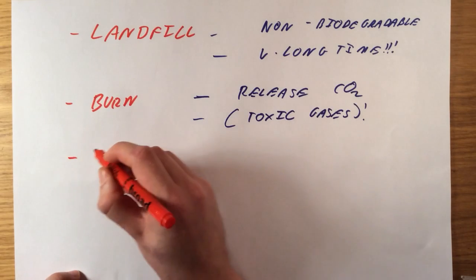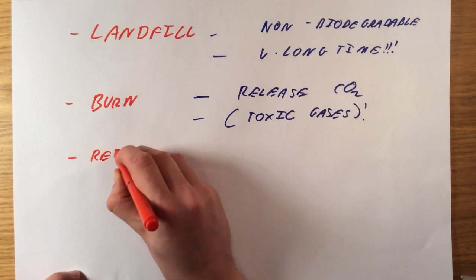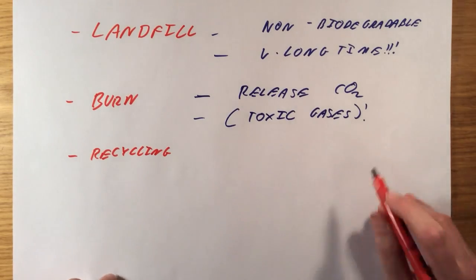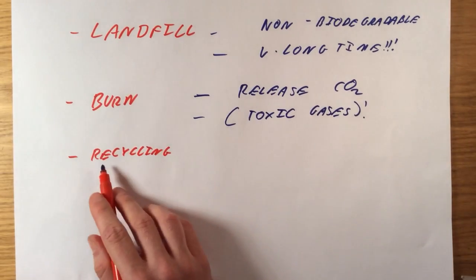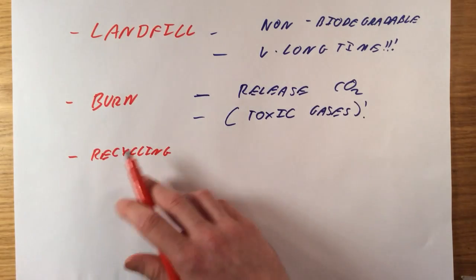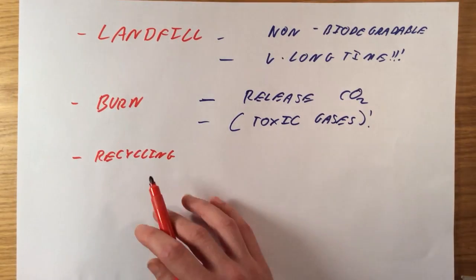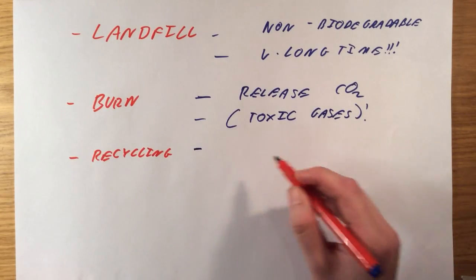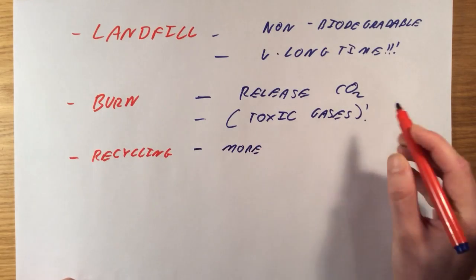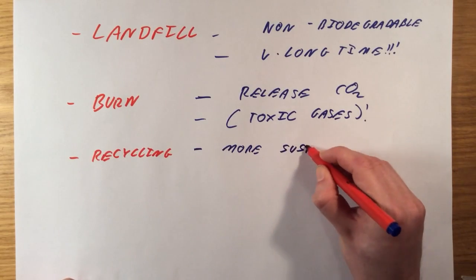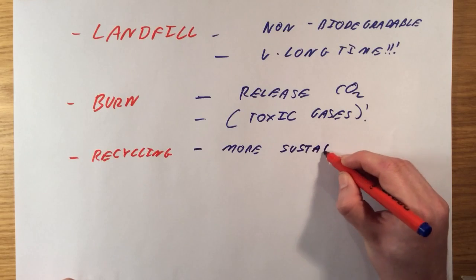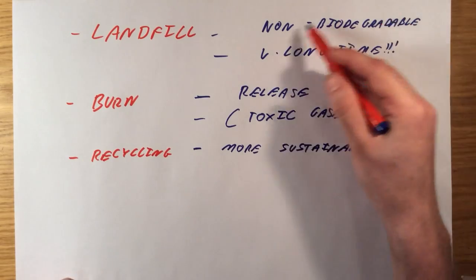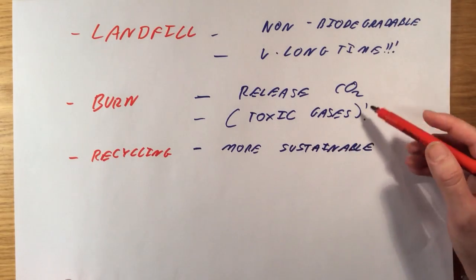The final method which we could use to dispose of them is by recycling. People often get confused between reusing and recycling. Recycling is taking the polymer, disposing of it and actually turning it into a new product. You might melt it down or compress it, turning it into something new. Recycling is going to conserve resources, so we'd say it's more sustainable. It avoids these problems. It's not going to fill up landfill. It's not going to release as much CO2.